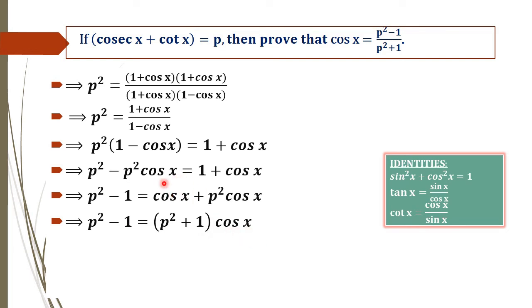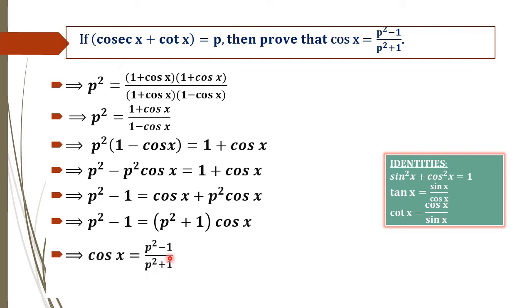By taking cos x outside, 1 will remain on one side and p squared on the other. This implies cos x equals p squared minus 1 divided by p squared plus 1. Hence, we have proved our result.